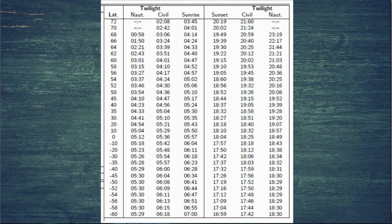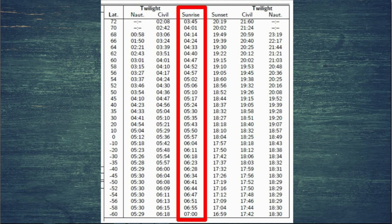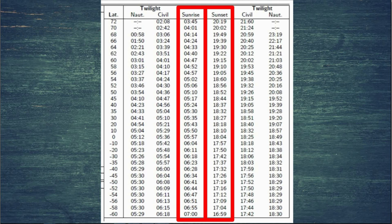The first thing to note is that this table spans across all three days — there's not a different table for each individual day. You've got a sunrise column, and before that the civil and nautical twilights. On the right-hand side of the table is the sunset column, again with civil and nautical twilights around sunset. We're interested in sunrise for our example, but you can follow the exact same principles for twilights or sunset.